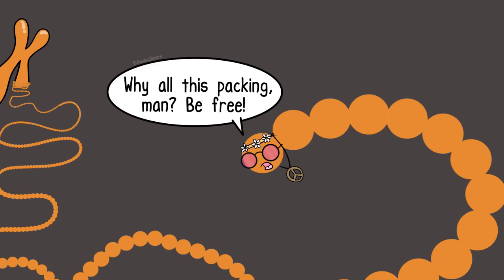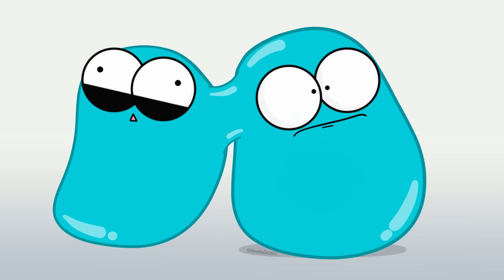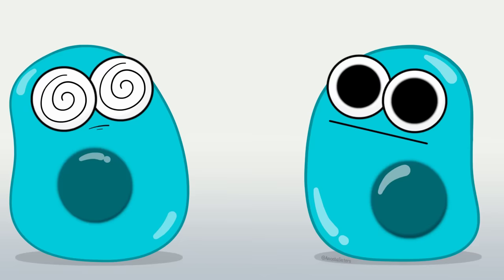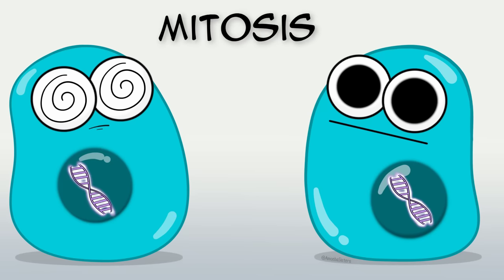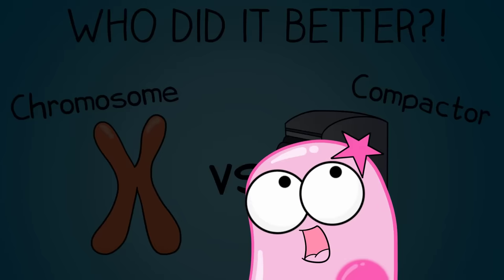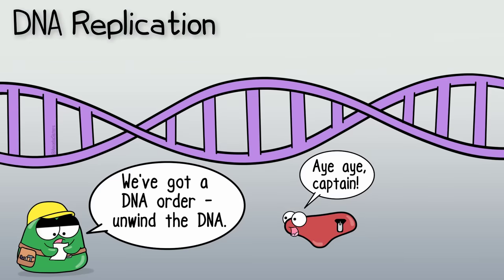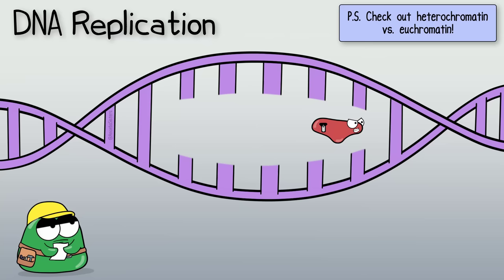But why all this packing? Well, in your cells you have a lot of DNA and it has to fit inside a nucleus. Another reason: it's also really important for when you make more cells, like in the process of mitosis. In mitosis, you have to be able to move DNA into new daughter cells, and these highly packed chromosome units make it easier to do so. By the way, it's not always packed up so tightly — for example, in DNA replication, DNA typically needs to be unwound. There are a variety of factors that also influence how tightly packed chromatin is.